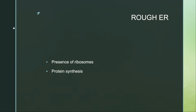Rough endoplasmic reticulum is rough and has a granular appearance. Ribosomes are attached to the endoplasmic reticulum, giving it a granular or rough appearance. Therefore, it is called rough endoplasmic reticulum, also known as granular endoplasmic reticulum.